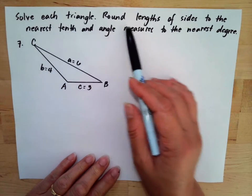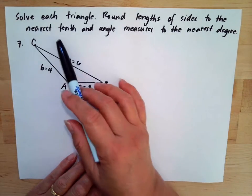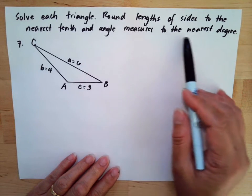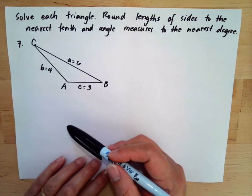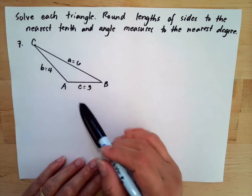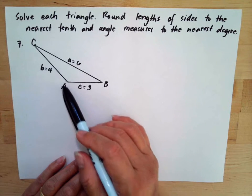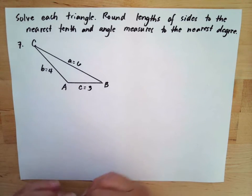Solve each triangle, rounding sides to the nearest tenth and angles to the nearest degree. Here we have three sides given and we need to solve the three angles.